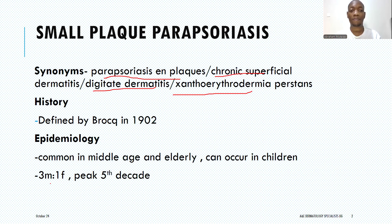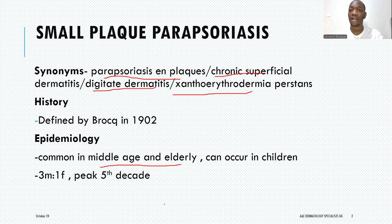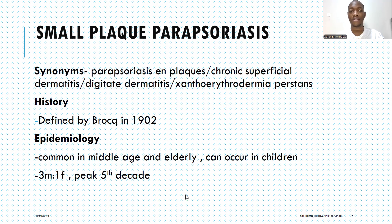Small plaque parasoriasis commonly affects middle-aged individuals but can also be seen in the elderly. It can occur in children, though rarely, with a male predominance — the male to female ratio is about 3 to 1 — and it peaks in the fifth decade.